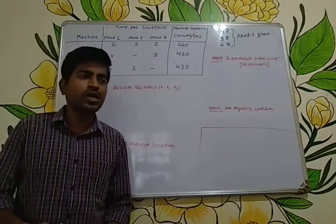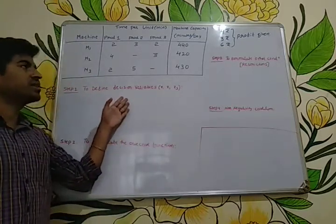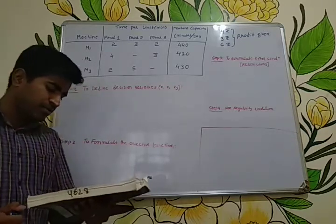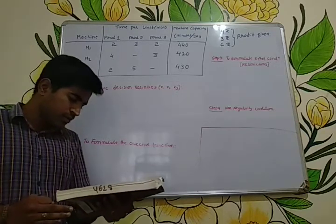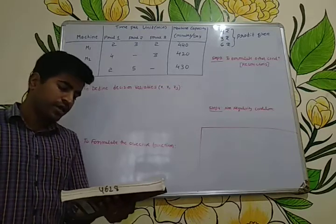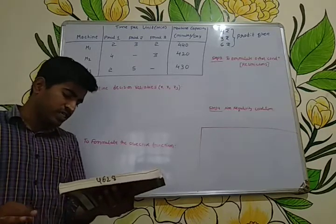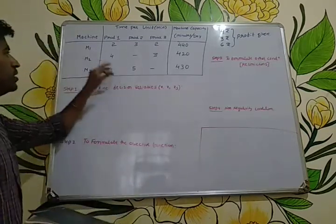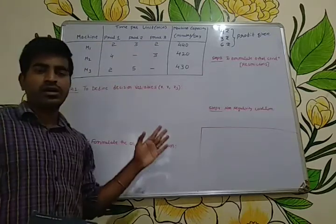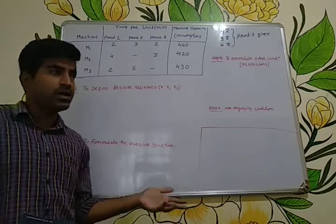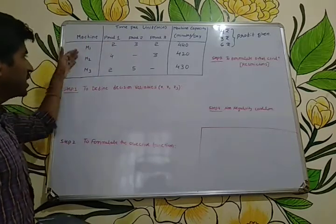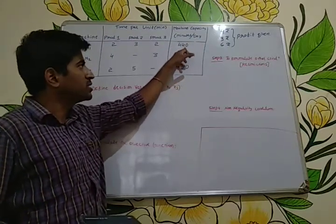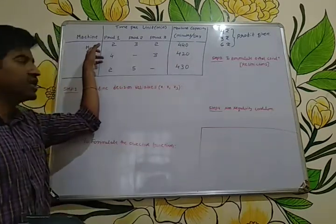This is the first example from your textbook. A small scale industry produces three rubber products. These products are processed on three different machines. The time required to manufacture one unit of each of the three products and the daily capacity of the three machines is given in the table. There are three kinds of rubber products to manufacture and sell, and there are three machines whose capacity is given.